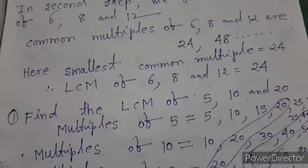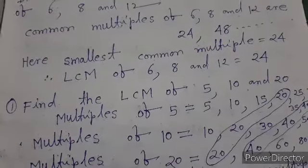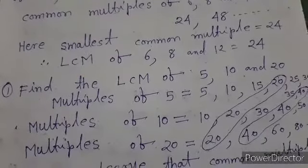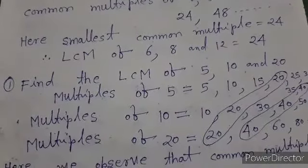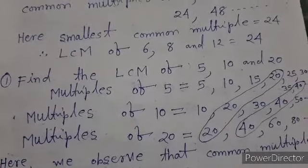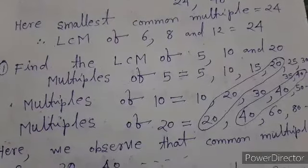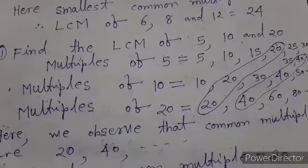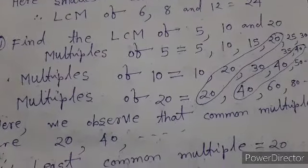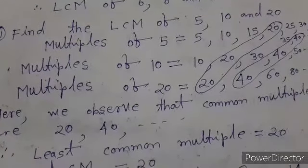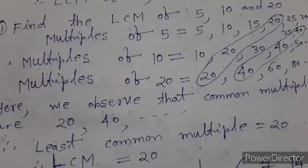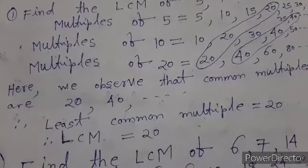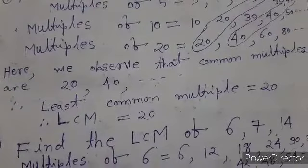To find the LCM of five, ten, and twenty, we first make the list of all the multiples. Multiples of five: five, ten, fifteen, twenty. Multiples of ten: ten, twenty, thirty, forty. Multiples of twenty: twenty, forty, sixty, eighty, and so on. Here we observe that the common multiples are twenty, forty, and so on. Hence, the least common multiple is equal to twenty. Therefore, LCM of five, ten, and twenty is twenty.